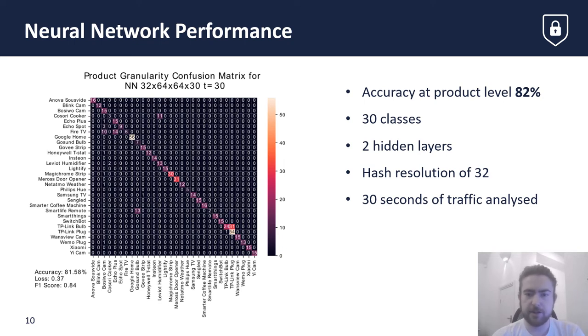The confusion matrix shows a number of testing data points that are classified and misclassified, with numbers along the main diagonal representing accurate classification. We can see that the Amazon devices, Echo Plus, Echo Spot and Fire TV, are sometimes misclassified, suggesting that traffic from these devices is similar in its characteristics.